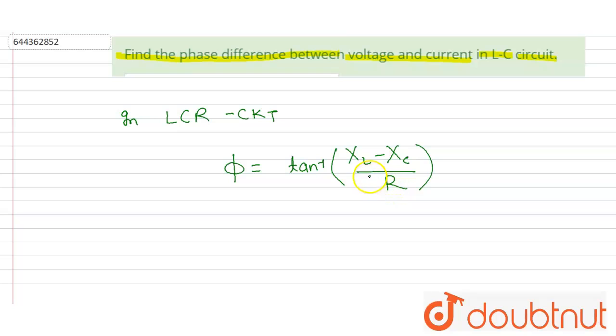and R is the resistance. Since this circuit is LC, that means